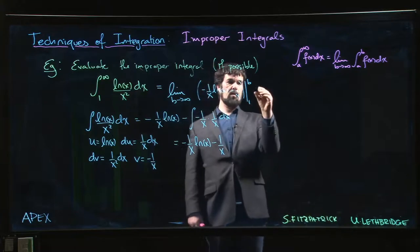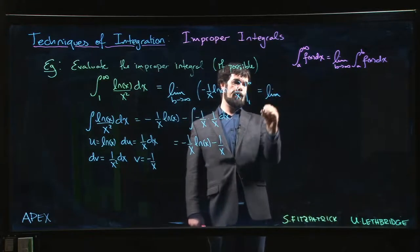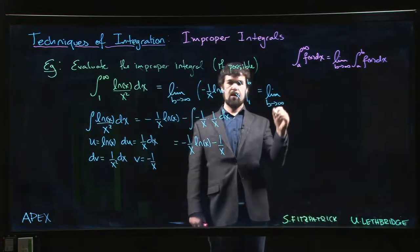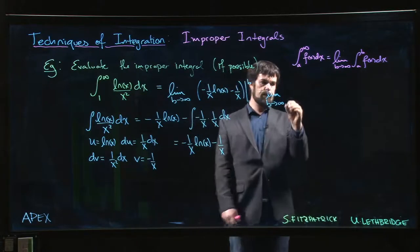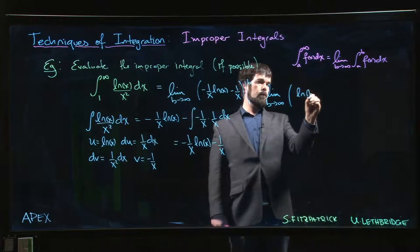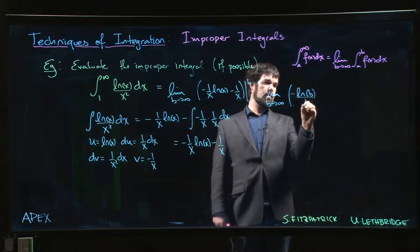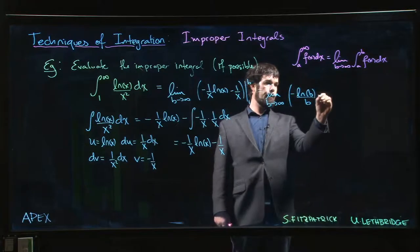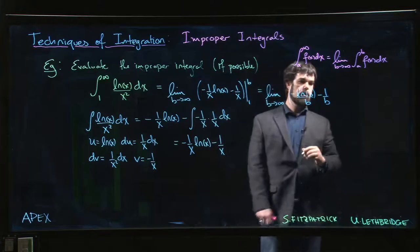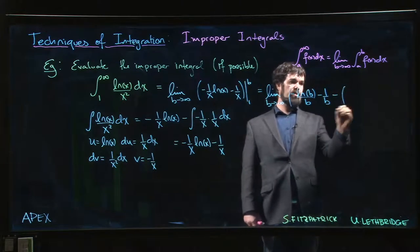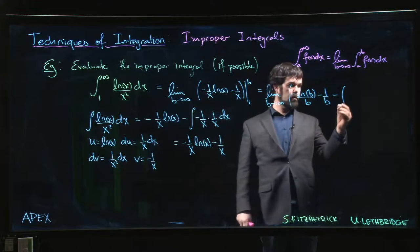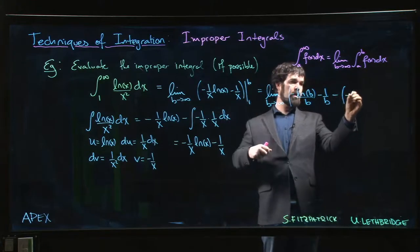So that's going to look like the limit as b goes to infinity of minus log b over b minus 1 over b, and then minus, so log of 1 is 0, and then that's just going to be minus 1.